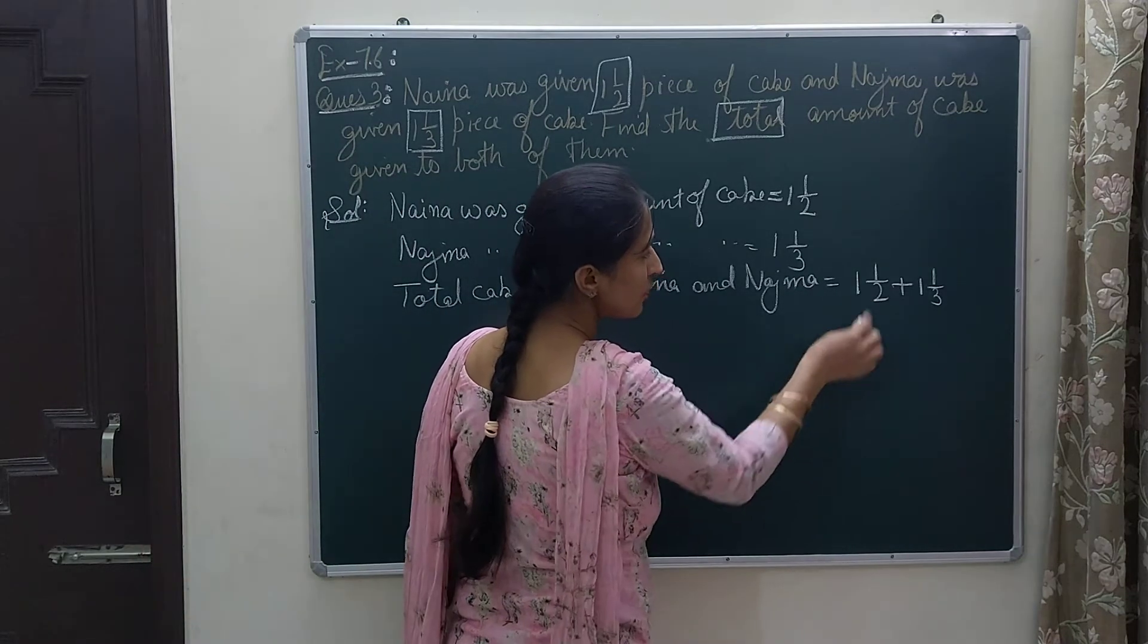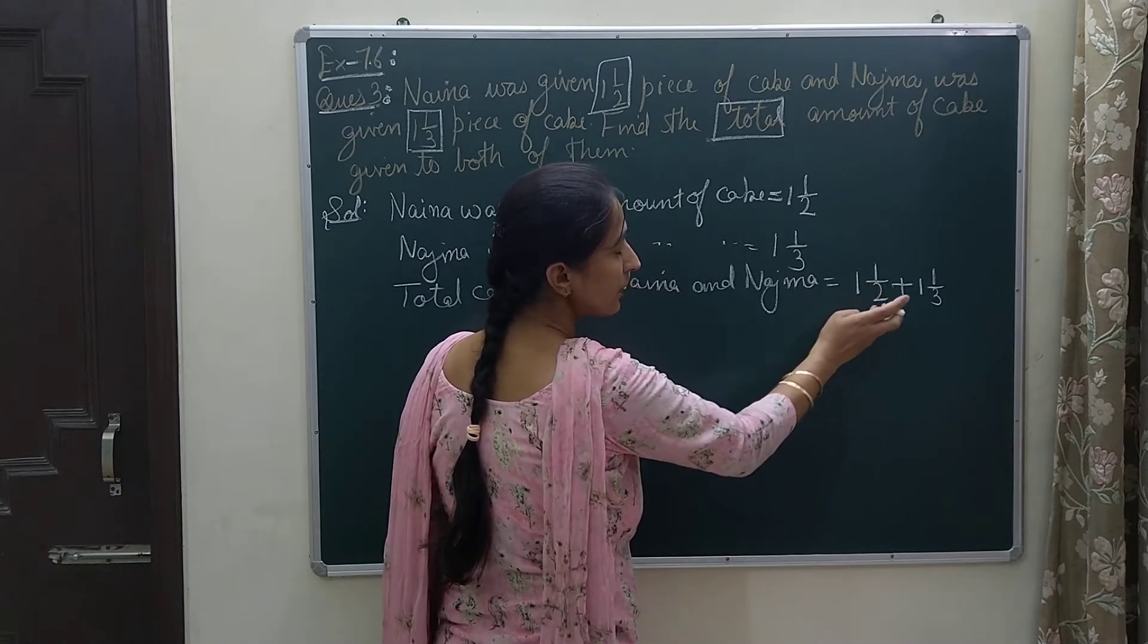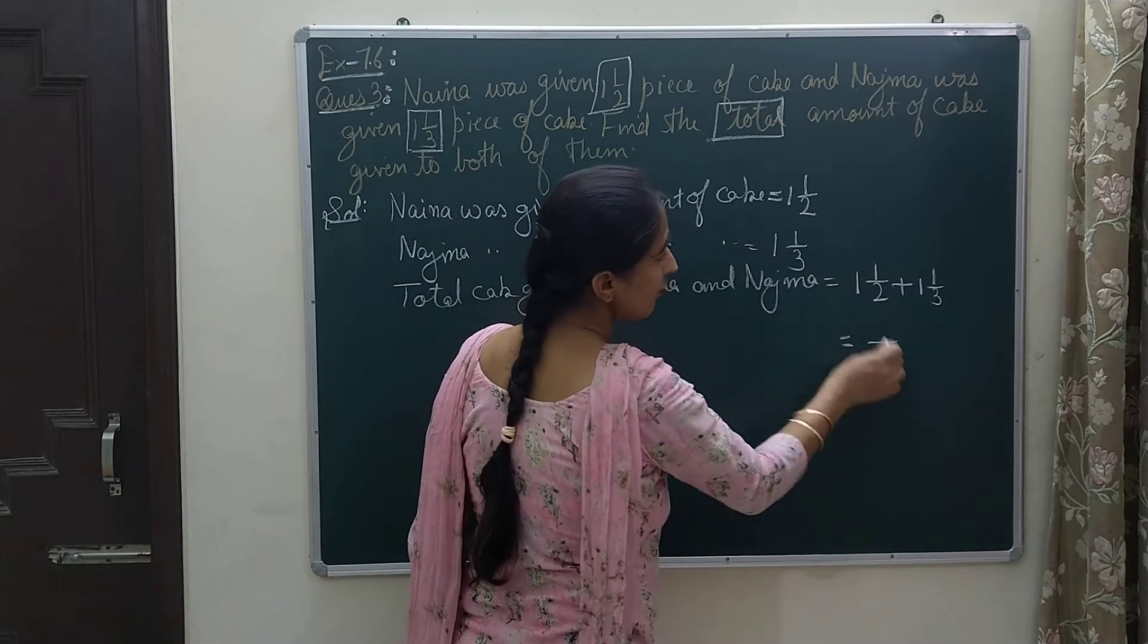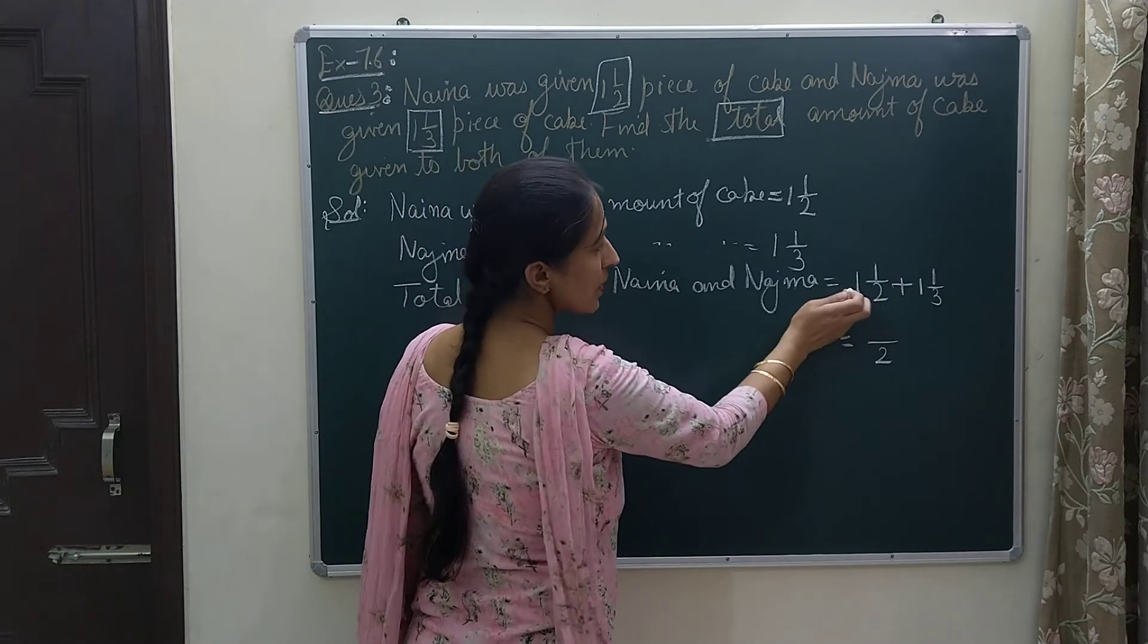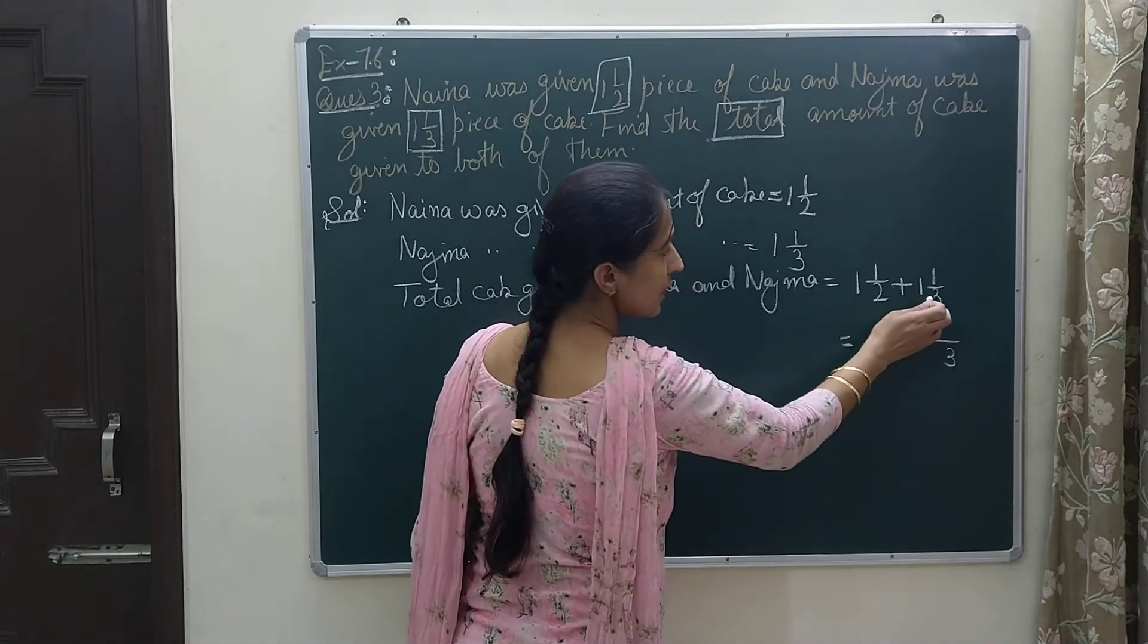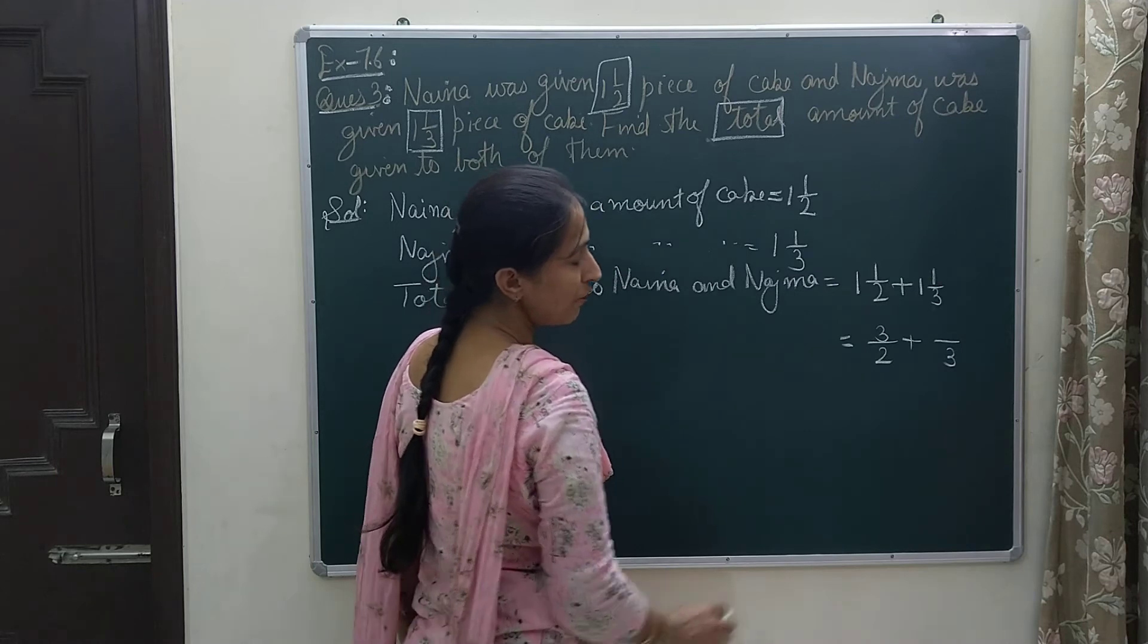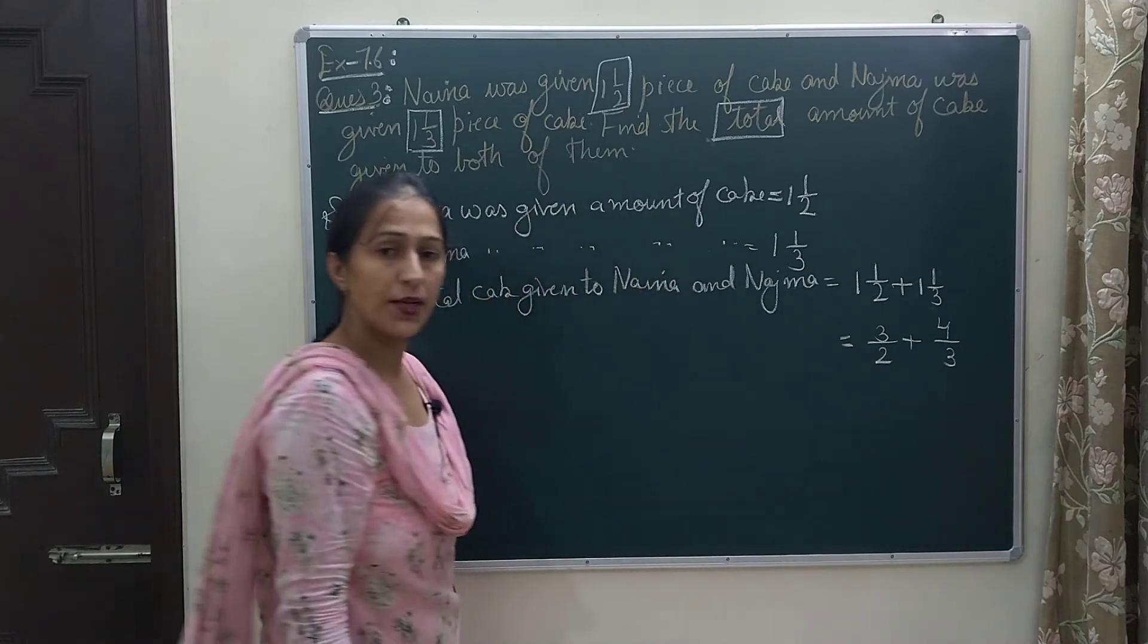We can see here that these two fractions are mixed fractions and we first of all convert these into improper ones. For that we will multiply this 2 by 1 we get 2 and then we will add the numerator term that is 1, 2 plus 1 is 3, so 3/2. And same way we will turn this 1 and 1/3 into improper form. We will multiply 3 and 1 it will be 3 and then we will add the numerator term 1, 3 plus 1 is 4, so 4/3.